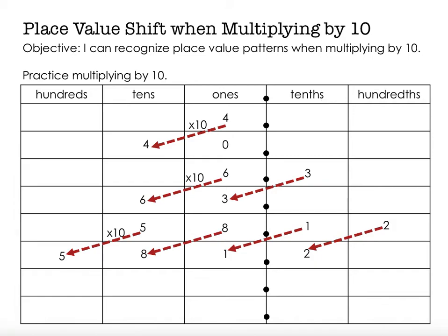Our objective says: I can recognize place value patterns when multiplying by 10. When I make a number 10 times bigger, I just move each of the parts one place value higher than it had been before, making the number 10 times bigger. What do you think you're going to do if you multiply by 100? 100 is 2 place value shifts. So if I multiplied 4 times 100, I would move the 4 to the hundreds place — 2 place values larger. And if I multiplied by 1000, it would be 3 place value sizes bigger; each digit would be shifted. So the pattern is: multiplying by 10 means each digit shifts one place value larger to make the number 10 times bigger than it was before.